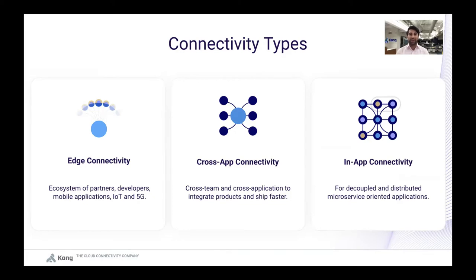There is going to be connectivity across our applications when different teams are exposing APIs that another team can consume. And then there is going to be more and more connectivity inside of our applications. Whenever our applications become microservice-oriented, all of the services that make up the final application communicate with connections, and those connections have to be secure, reliable, and observable.